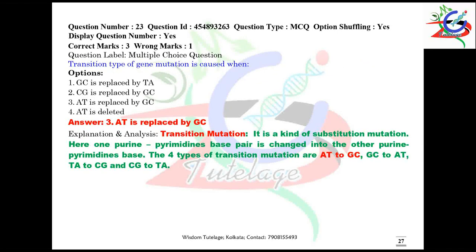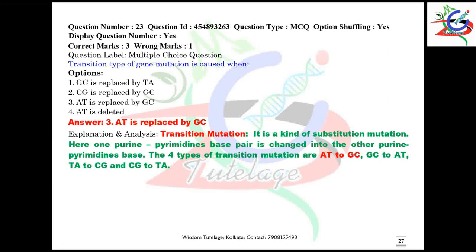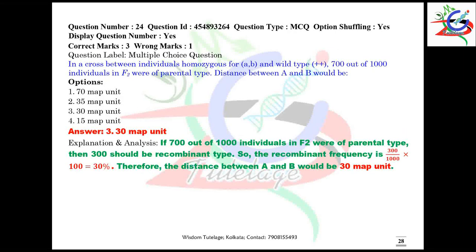Question number 23: transition type of gene mutation is caused when AT is replaced by GC — that means a purine is replaced by another purine, or a pyrimidine is replaced by another pyrimidine.